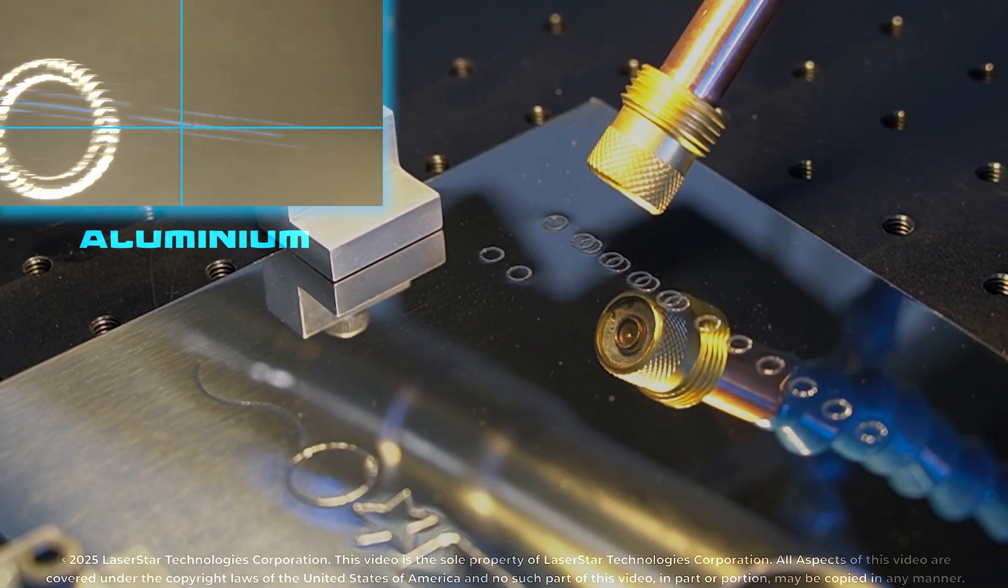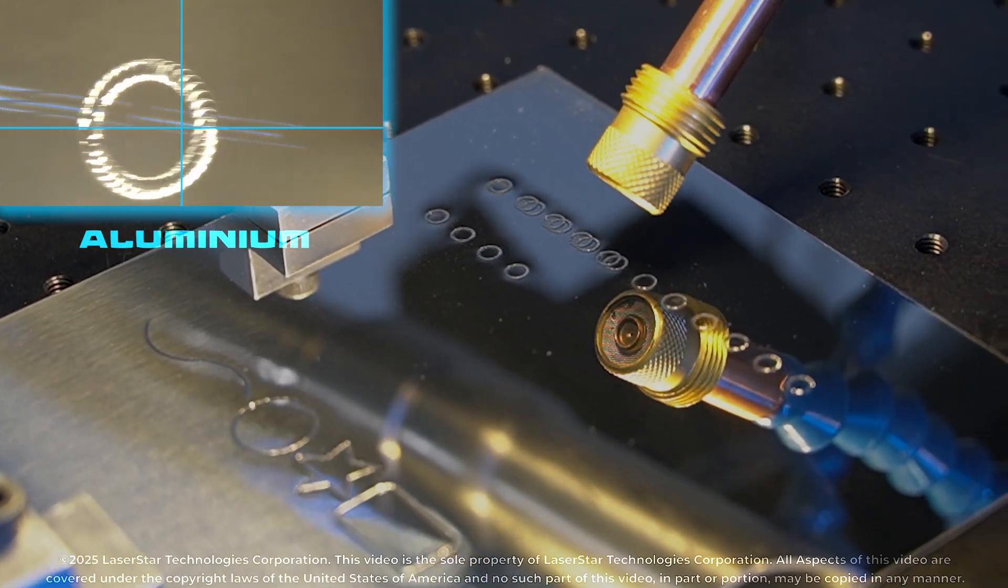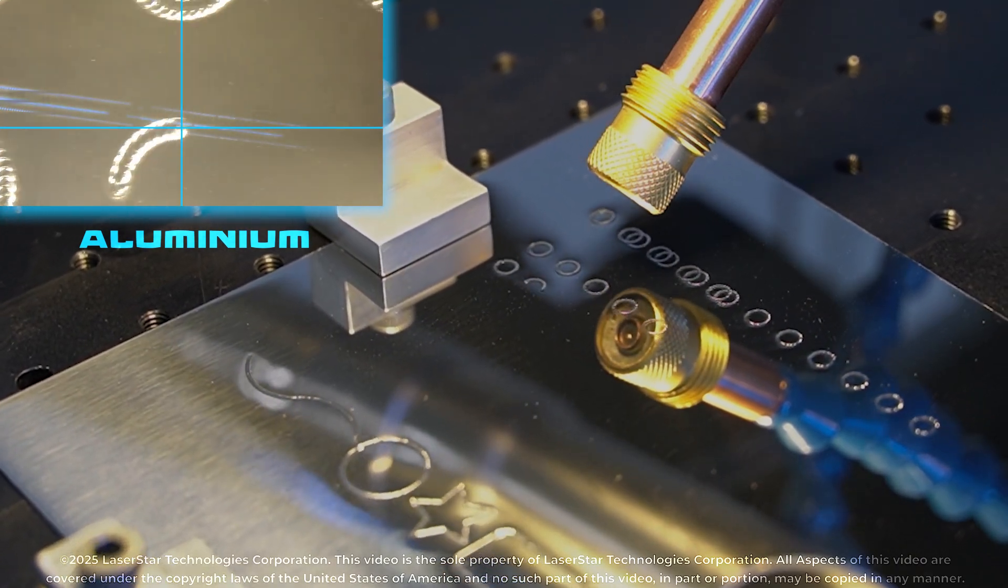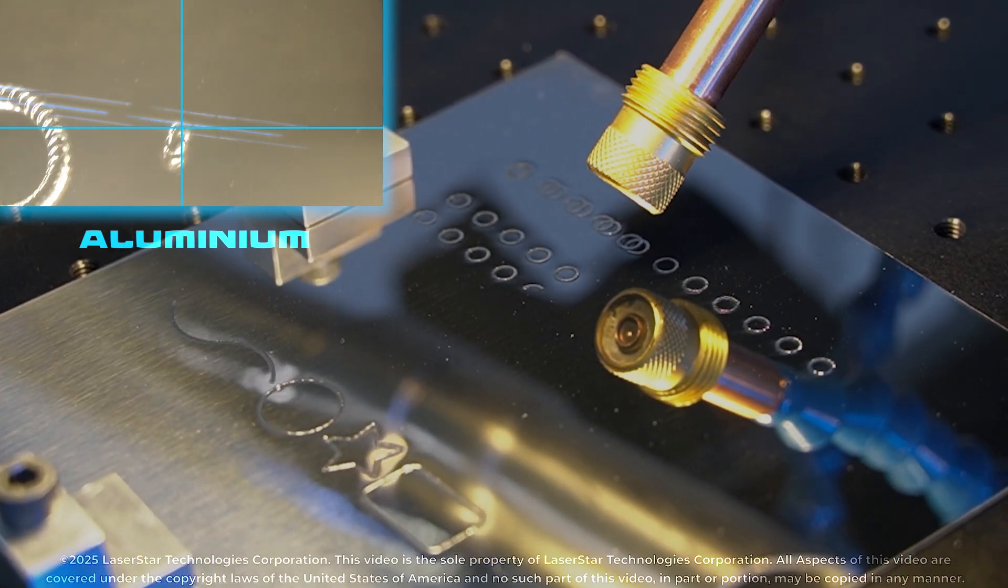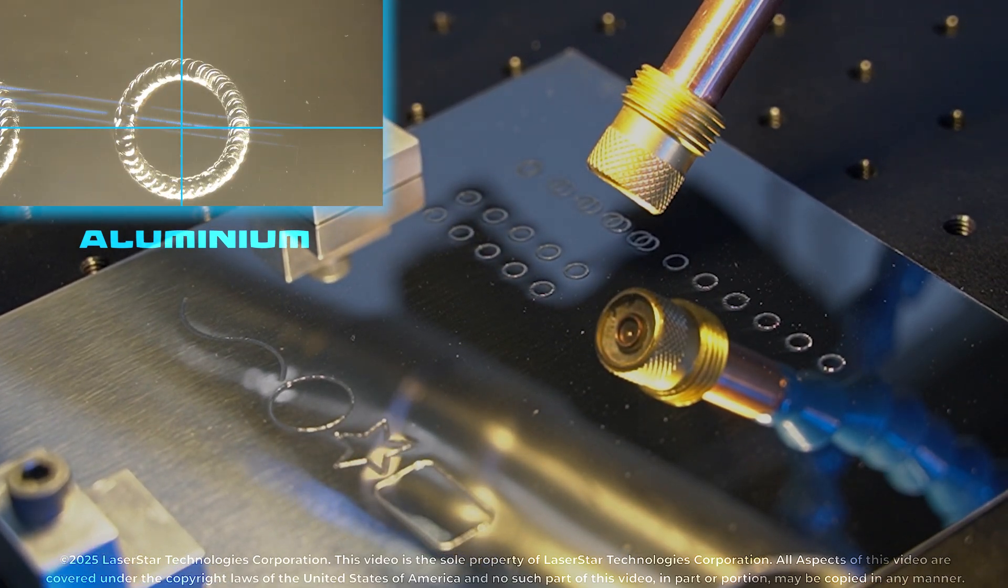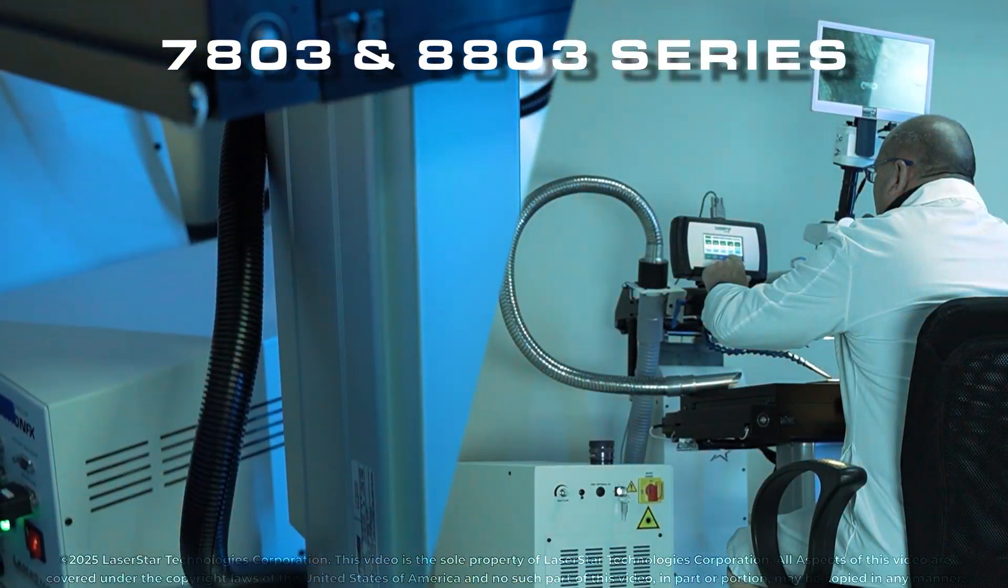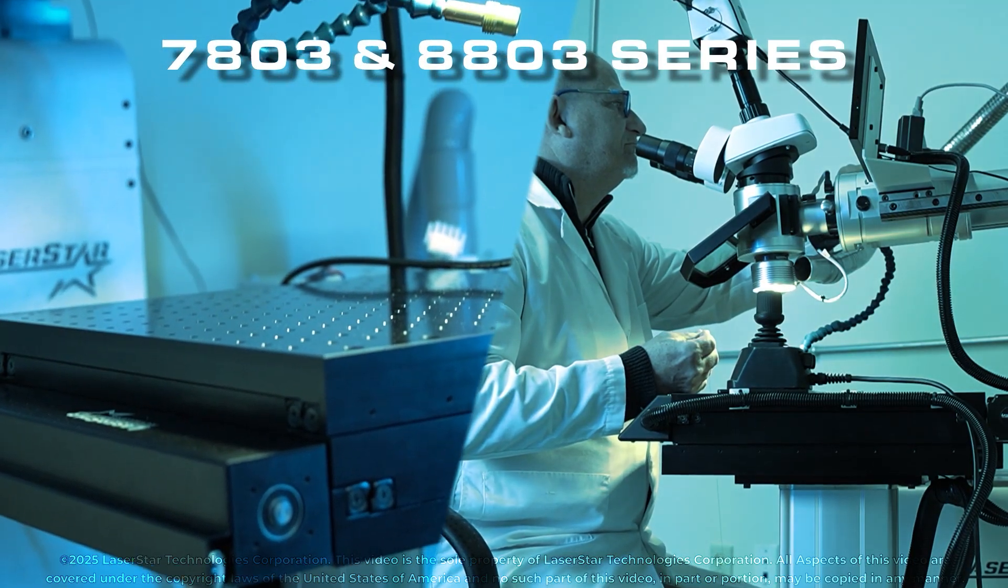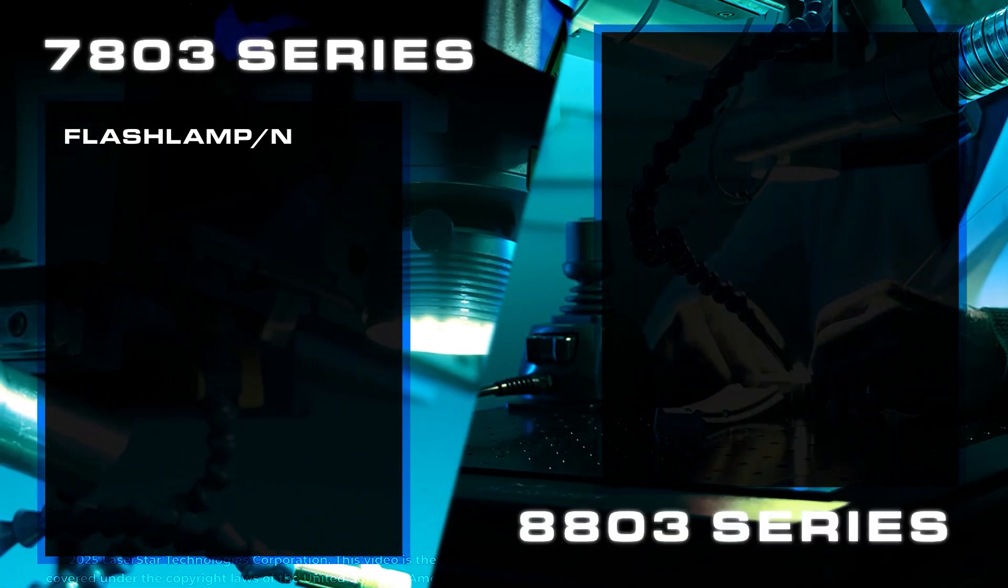The large working area and programmable capabilities of Motion FX make the 7803 and 8803 perfect for doing an array of parts in high-volume production scenarios. Overall, the 7803 and 8803 series CNC industrial welding workstations are effective solutions for driving the success of companies in all industries. There are a few key differences between the two systems.